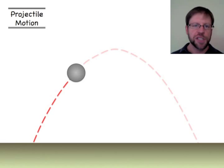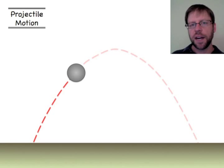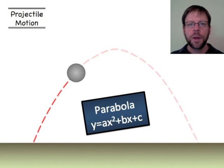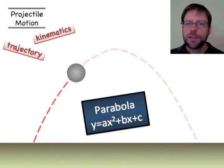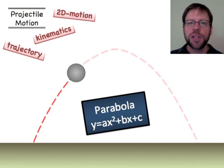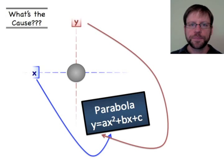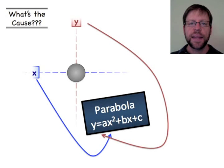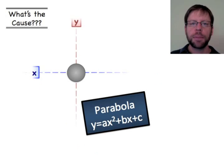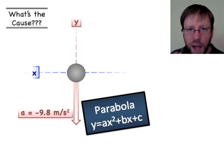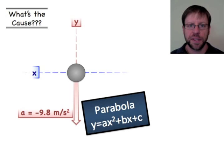Whenever we say projectile motion, we're talking about the characteristic parabola you see when an object is flying through the air. You may hear terms like kinematics, trajectories, or general two-dimensional motion — these are just different ways to talk about the same thing. We have the y dimension (vertical) and the x dimension (horizontal), and both dimensions appear inside this parabola. That raises the question: why do we get a parabola in the first place?